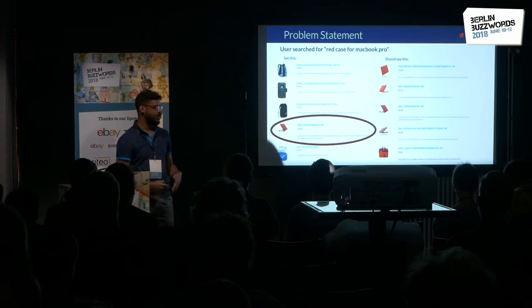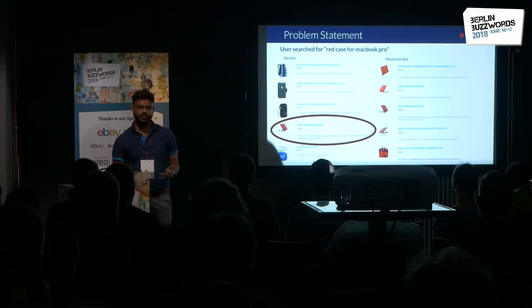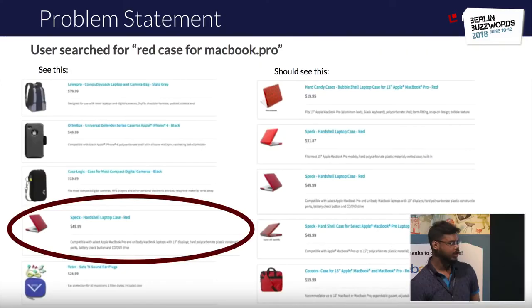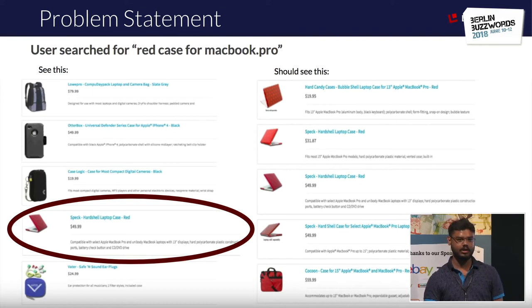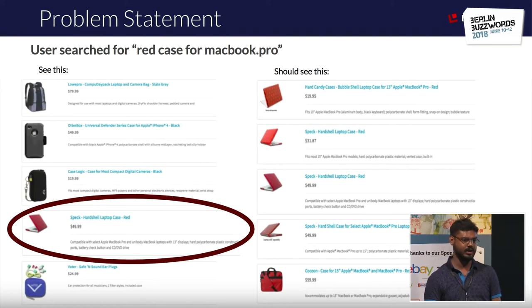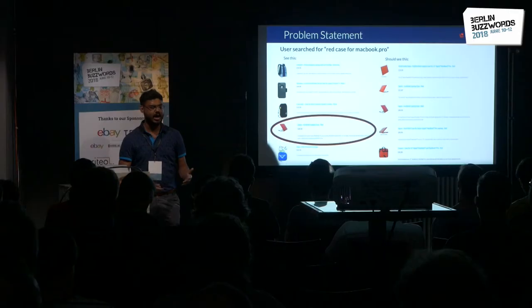We have come a long way from being dependent on keyword-based search. Modern search applications are driven by user intent. For example, with the query 'red case for MacBook Pro,' you'd like the end user to see the results on the right-hand side. But classic similarity algorithms like TF-IDF or BM25, which are heavily dependent on terms in your index or content, may yield results like those on the left — out of the top five results, only one is relevant.